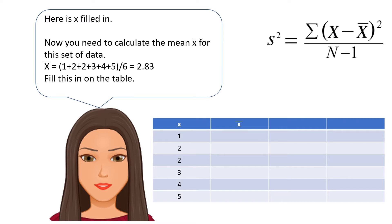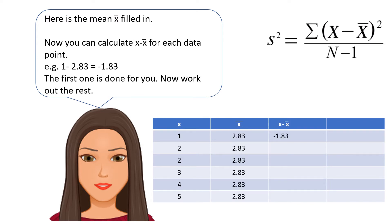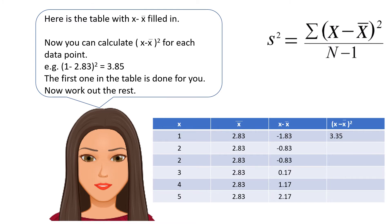Now fill in the mean on the table — pause here to do this. Here's the table with the mean filled in. Now use the third column to work out X minus X-bar for each data point. For the first one, it's 1 minus 2.83, which equals minus 1.83. Pause here to work out the rest.